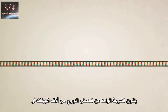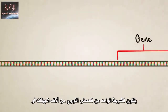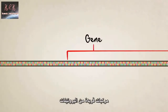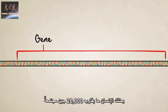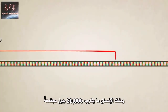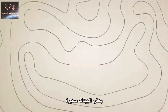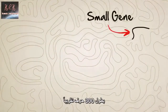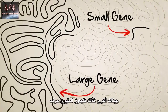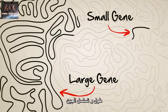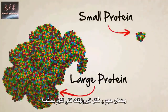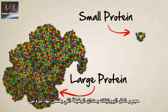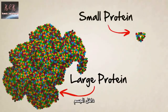A single strand of DNA contains thousands of genes, or unique protein recipes. Humans have roughly 20,000 altogether. Some genes are small, only about 300 letters long; others are well over a million. The length and sequence of a gene determine the size and shape of the protein it builds, and the size and shape of the protein determine the function that protein will have inside the body.